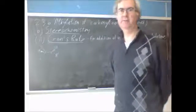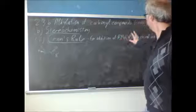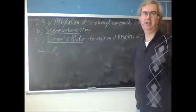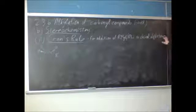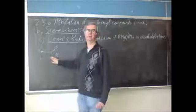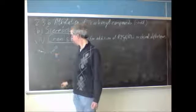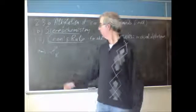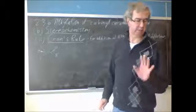Next, I'd like to talk about Cram's rule, which deals with additions of organolithiums and Grignard reagents to chiral aldehydes and ketones — such as this one. This could be a hydrogen if it's an aldehyde, or it could be an alkyl group. I'm assuming it's an acyl alpha group for the purposes of this.